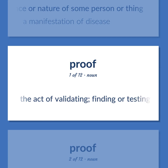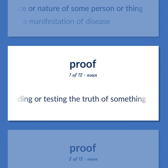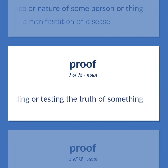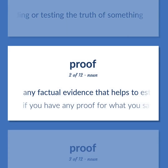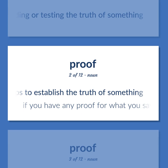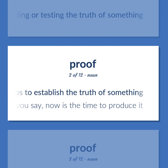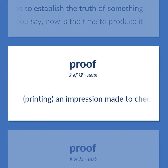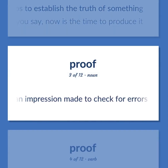Proof: The act of validating — finding or testing the truth of something. Any factual evidence that helps to establish the truth of something. If you have any proof for what you say, now is the time to produce it. Printing: an impression made to check for errors.